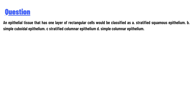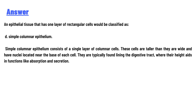A) stratified squamous epithelium, B) simple cuboidal epithelium, C) stratified columnar epithelium, or D) simple columnar epithelium. The question is: an epithelial tissue that has one layer of rectangular cells would be classified as...